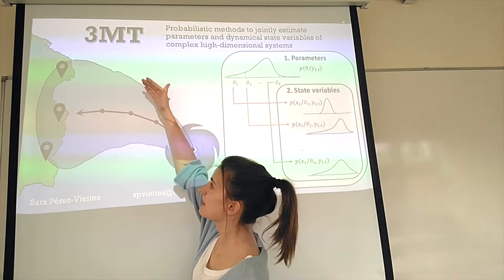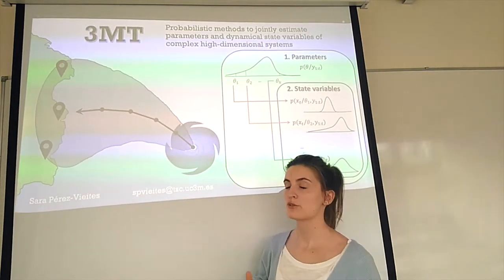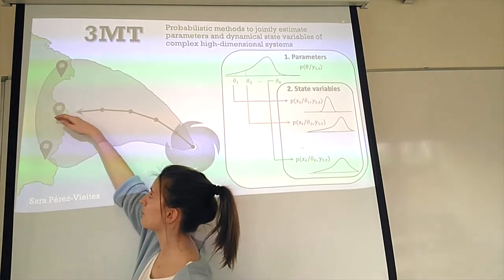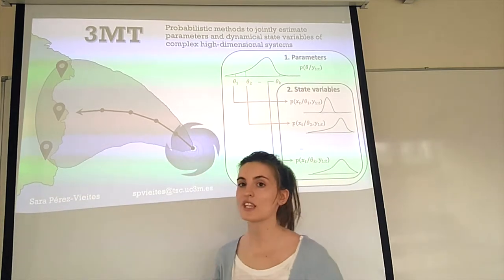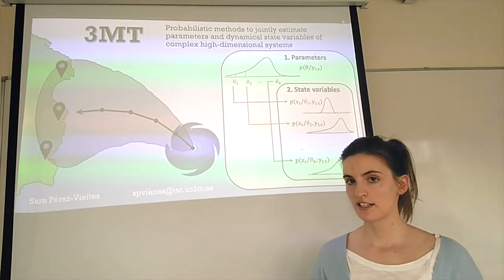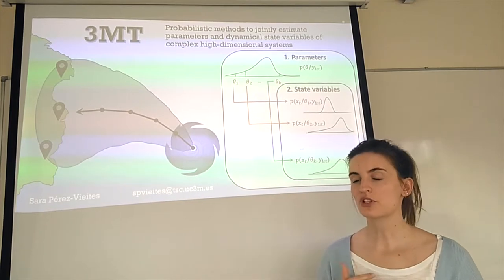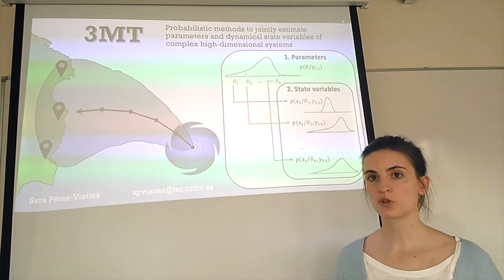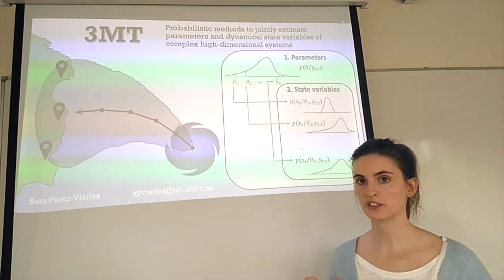That basically means that the hurricane actually could end up at any place of this coastline. So the question here is, is this information enough to take any decision about what to do with these people in these cities?